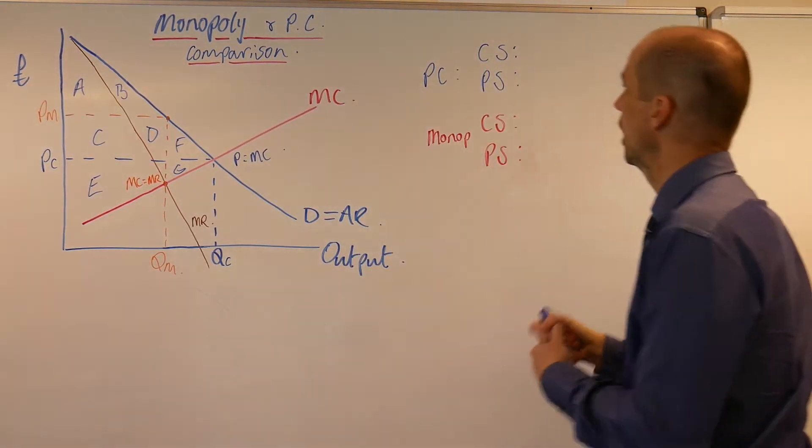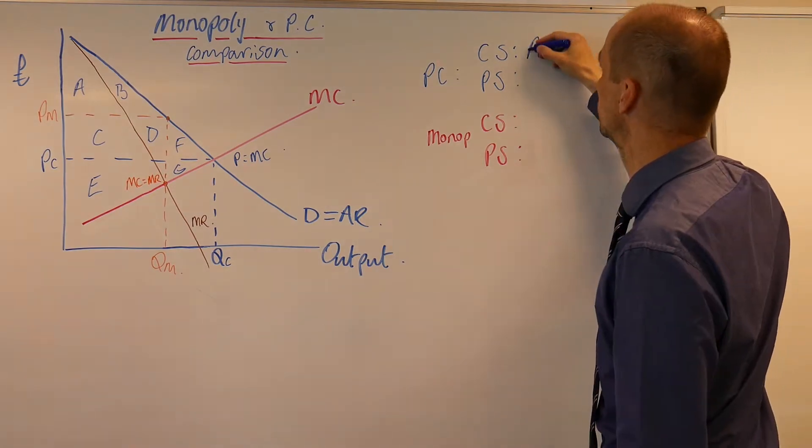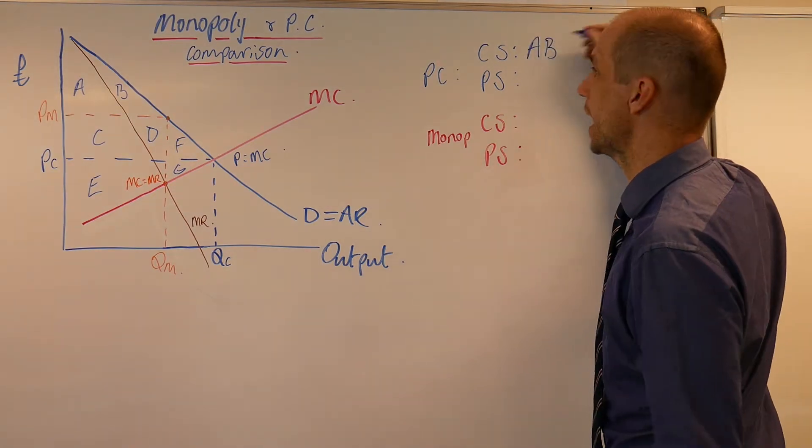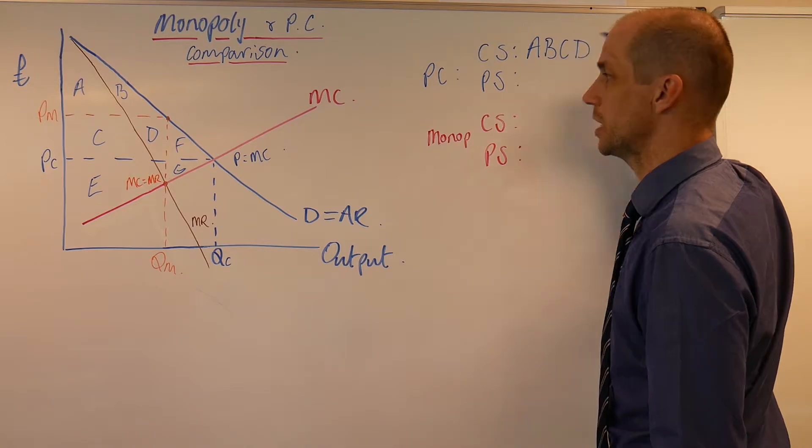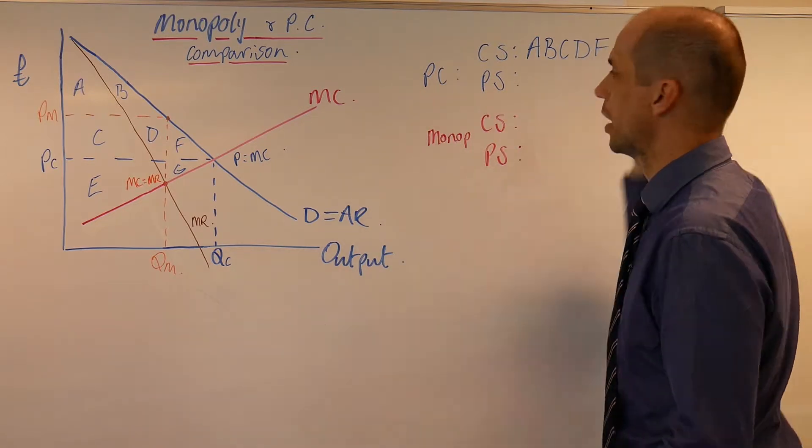price equals marginal cost. As such, we can see that the consumer surplus would be areas A, B, C, D, and F.